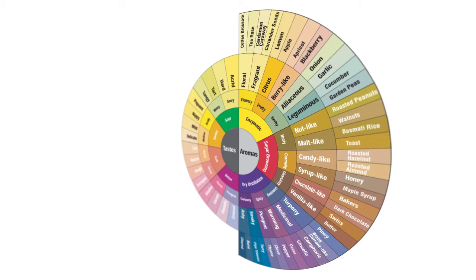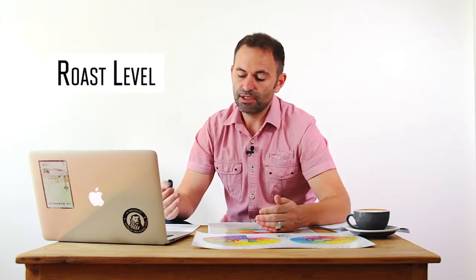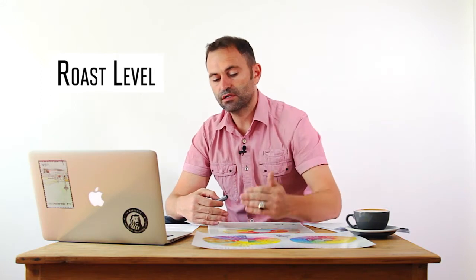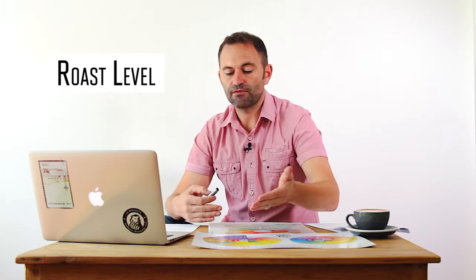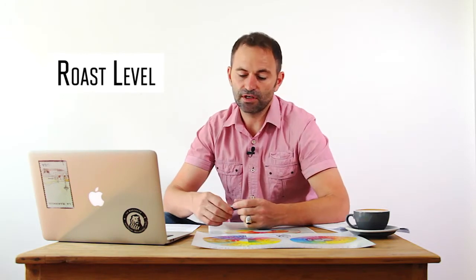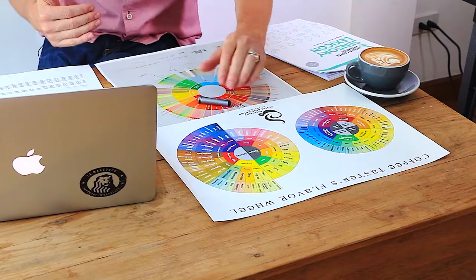Now we're going to look at the five reasons why the aroma side of the old flavor wheel is laid out the way it is. Reason number one is roast level: a light roasted coffee is going to have more enzymatic flavors, a medium roast more sugar browning, and a darker roast more dry distillation flavors — so you have light, medium, and dark roast in a clockwise rotation.